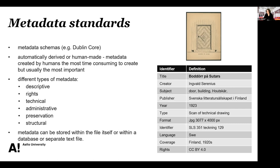Metadata created by humans is most time-consuming to create but usually most important — this is where you jot down how you've done your research or how you found your interview participants and so forth. There's a list of different types of metadata: descriptive, rights information, technical information about how a digital file was created, administrative on how it's managed, preservation metadata on how it should be kept in the future, and structural metadata on how it relates to different versions.